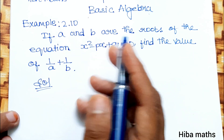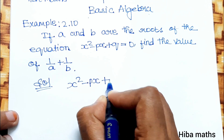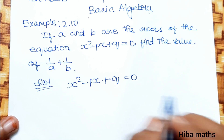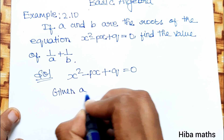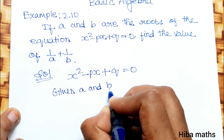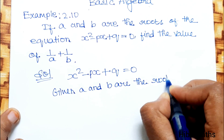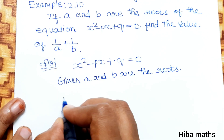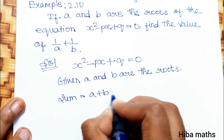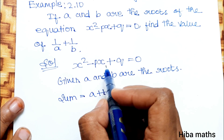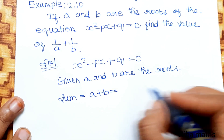We have 2 roots. Given a and b are the roots of x squared minus bx plus q equals 0. First, the sum of the roots: a plus b is equal to minus b by a. So, the sum is equal to minus b by a.